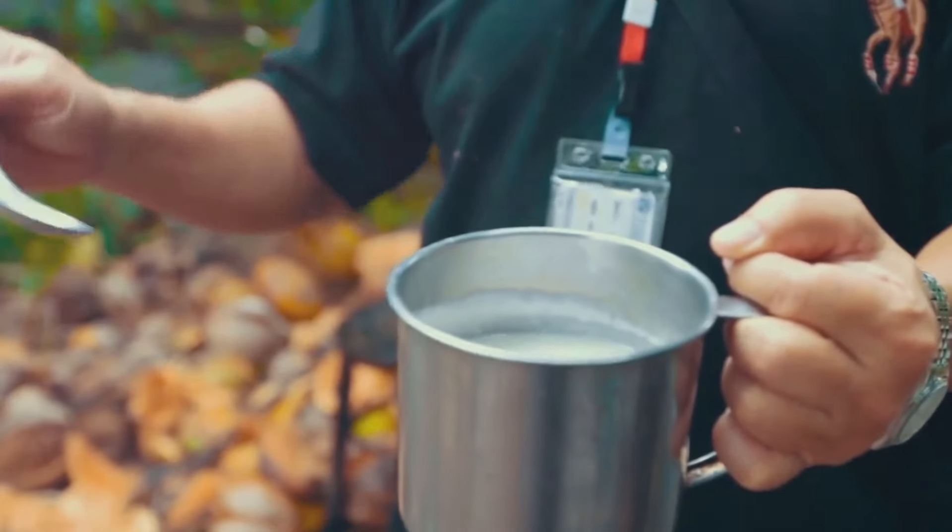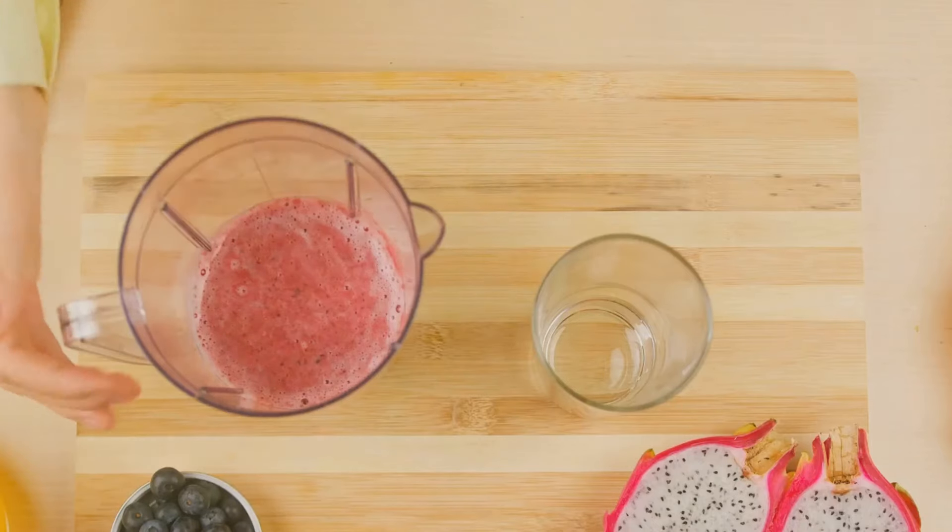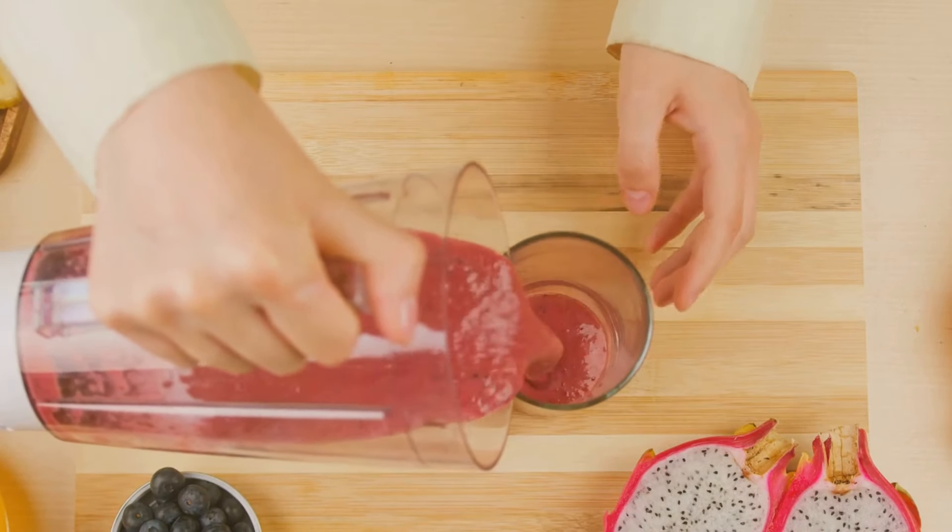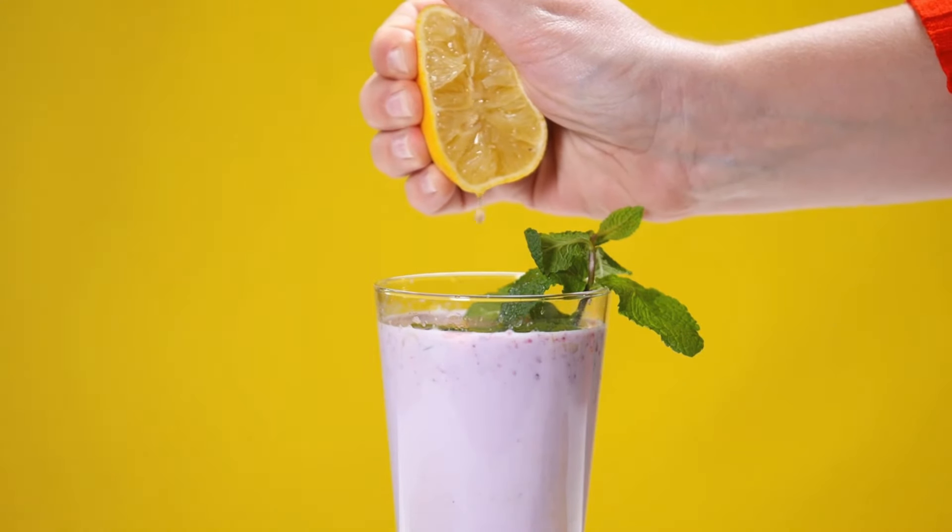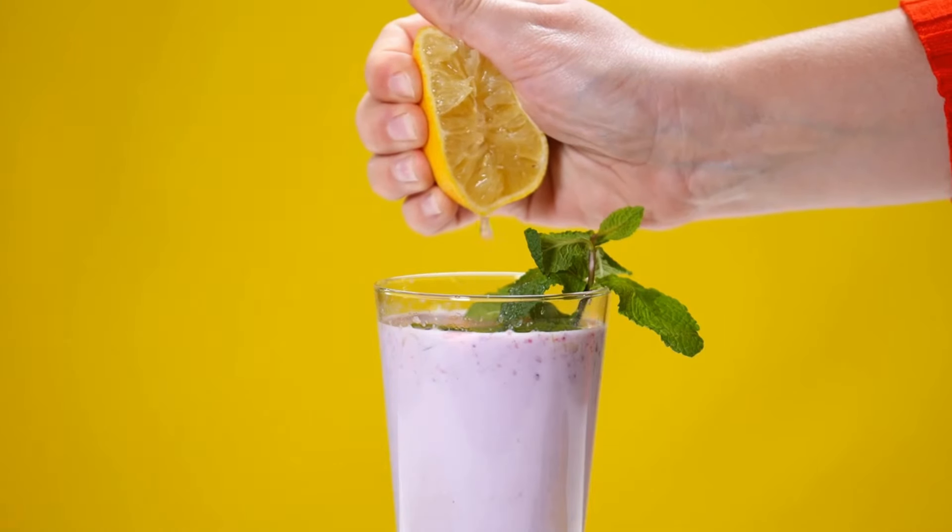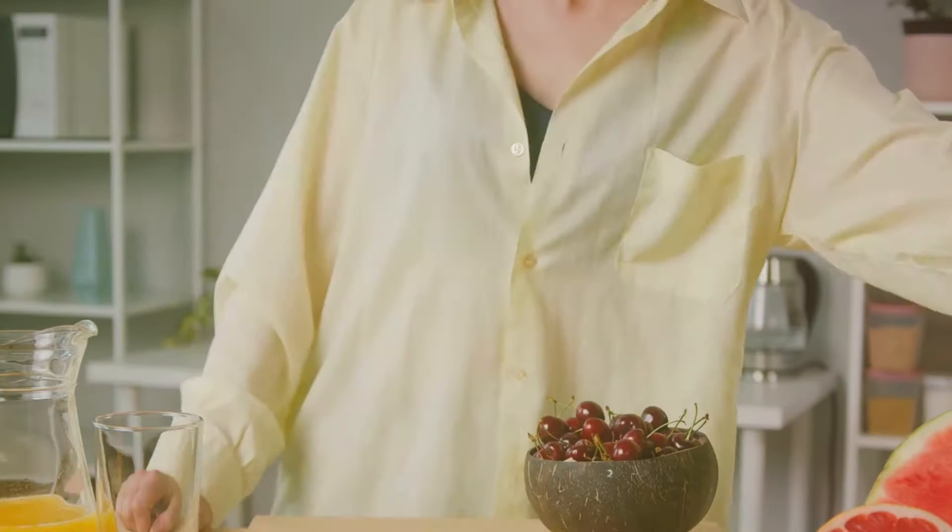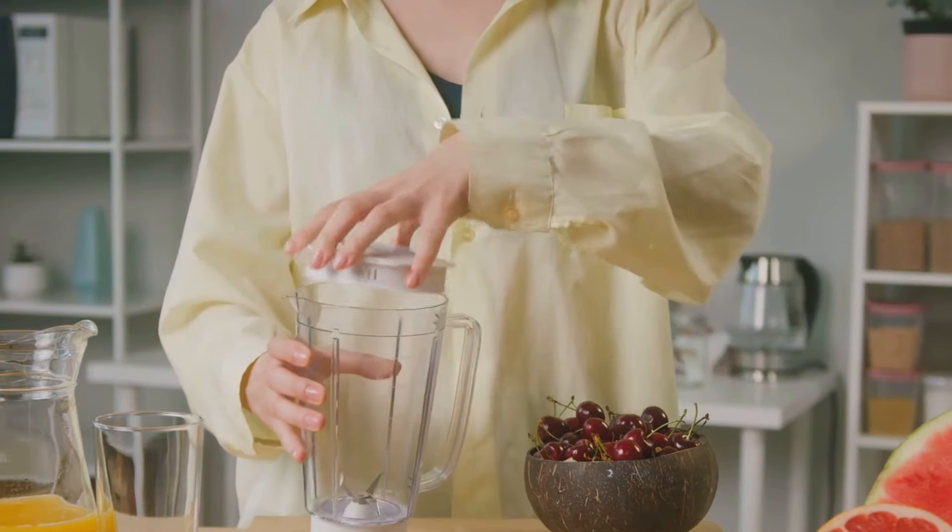Our last recipe is clove-infused smoothie. Blend a banana, a cup of mixed berries, a cup of clove water, and a spoon of honey. This smoothie is a powerhouse of antioxidants and is a great post-workout drink. The clove water adds a subtle spicy note that complements the sweetness of the fruits. Remember, these are just a few examples. You can always experiment and create your own recipes with clove water.